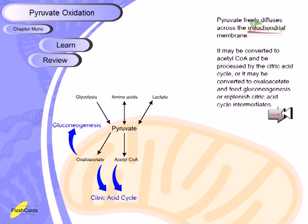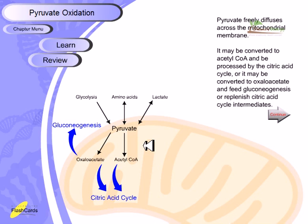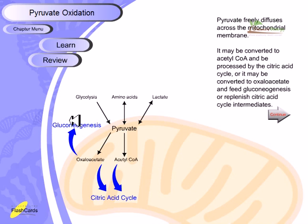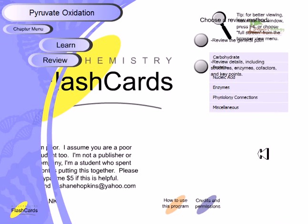Pyruvate freely diffuses across the mitochondrial membrane and has several fates: it may be converted to acetyl-CoA and processed by the citric acid cycle; it may be converted to oxaloacetate to feed gluconeogenesis or replenish citric acid cycle intermediates; or under anaerobic conditions it produces lactate. This is all about how pyruvate is oxidized, and I hope it helps. Thank you.